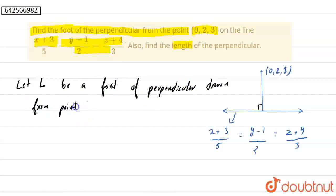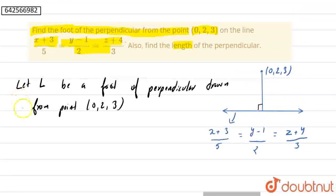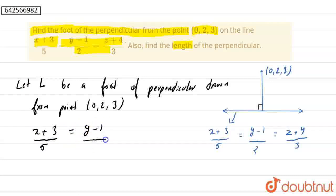Now if we see our given equation we can write it as (x+3)/5 = (y-1)/2 = (z+4)/3.